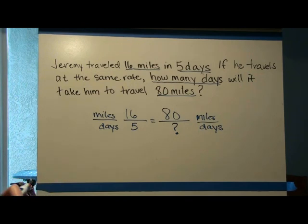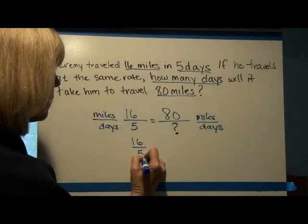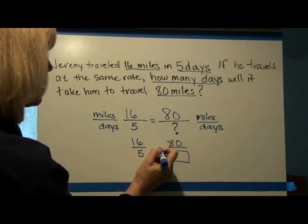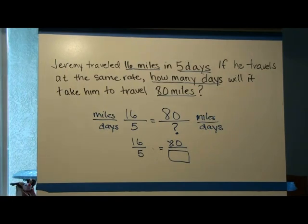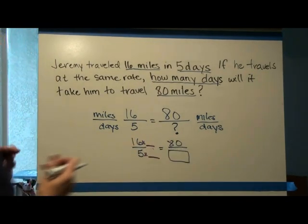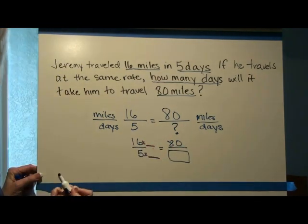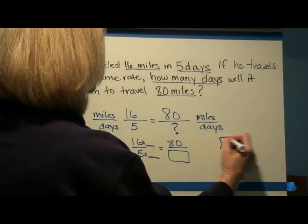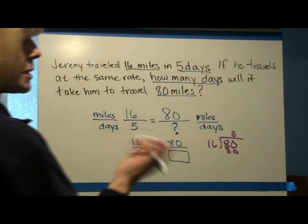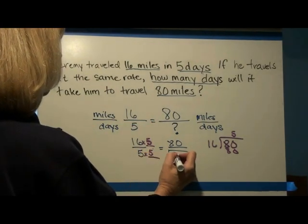Now we need to use what we know about solving proportions and solve for the question mark. In the last module, one of the ways shown was to figure out what you're multiplying by to get the equivalent fraction, because that's exactly what ratios are. We need to multiply 16 by 5 to get 80. How many times does 16 go into 80? That's 5, because 5 times 16 is 80. So if I multiply the top by 5, I need to multiply the bottom by 5, and that gives me 25.